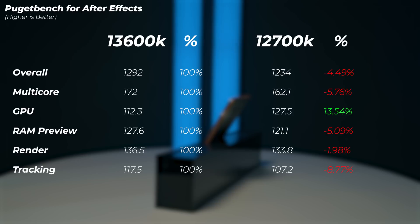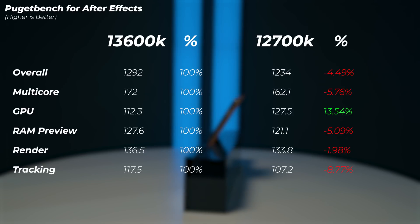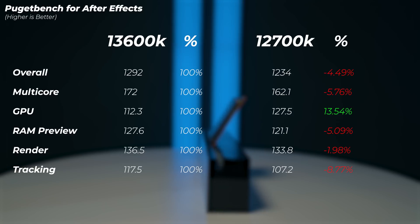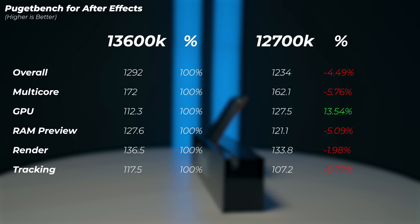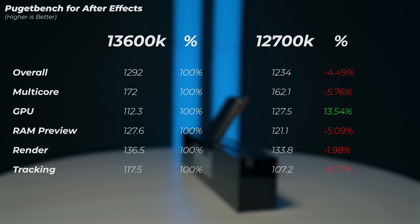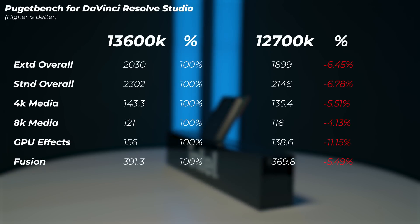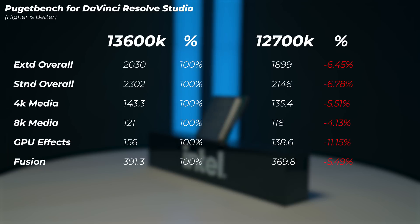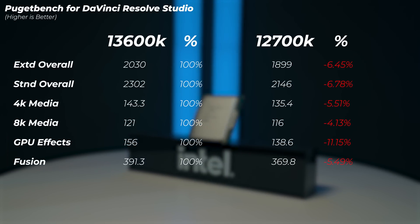In After Effects the gap widens — the overall score is about 4.5% slower on the 12700K, but interestingly the GPU score is about 13.5% faster on the 12700K. In DaVinci Resolve, the 12700K is 6.5% slower in the extended score and 6.8% slower in the standard overall score, which is quite a noticeable difference.